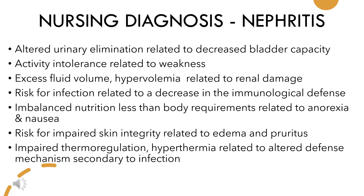Nursing diagnoses for a patient with nephritis are: altered urinary elimination related to decreased bladder capacity; activity intolerance related to weakness; excess fluid volume or hypovolemia related to renal damage; risk for infection related to decrease in immunological defense; imbalanced nutrition less than body requirements related to anorexia and nausea; risk for impaired skin integrity related to edema and pruritus; and impaired thermoregulation — hyperthermia — related to altered defense mechanism secondary to infection.